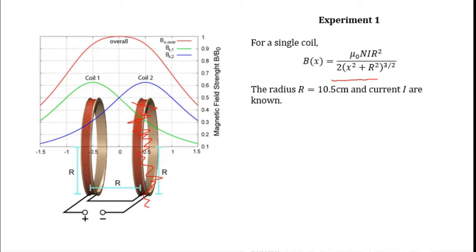Note that the radius R and the current I are known. So you yourself need to set the value of current, and R is given by 10.5 centimeters.